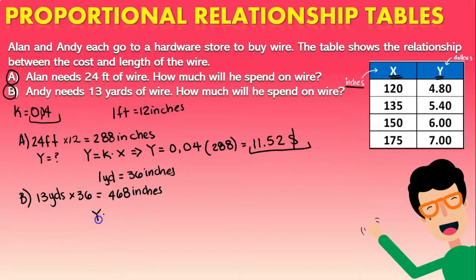So y is equal to 0.04 which is the value of k we found out, times the amount of inches which is the value of x which is 468. And then once we multiply that, the amount that Andy is going to have to pay is 18.72 dollars.